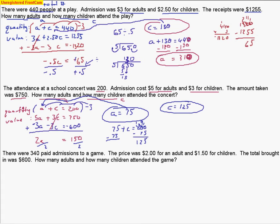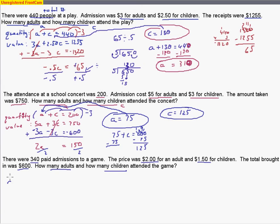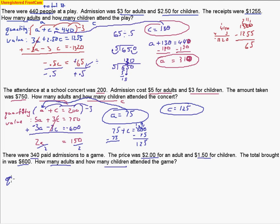Last problem: 340 people paid admission to go to a game. The price for an adult ticket was $2, a children's ticket $1.50, and the total brought in was $600. How many adults, how many children? Let's set up our quantity equation: A plus C equals 340. The value equation: $2 times A plus $1.50 times C equals $600.